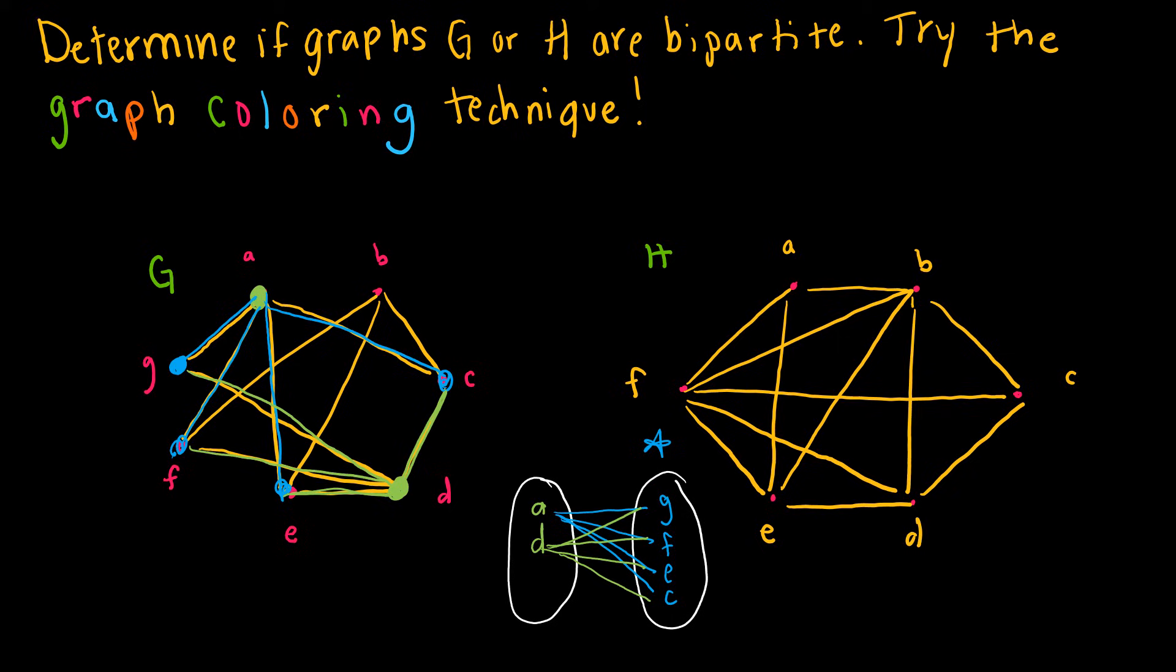Then I look at B. B is connected to a blue, so we color it green. Remember, we can't have two of the same color connected. So B to F, B to E, and B to C. Yes, this is in fact a bipartite graph because I used the graph coloring technique to determine it.